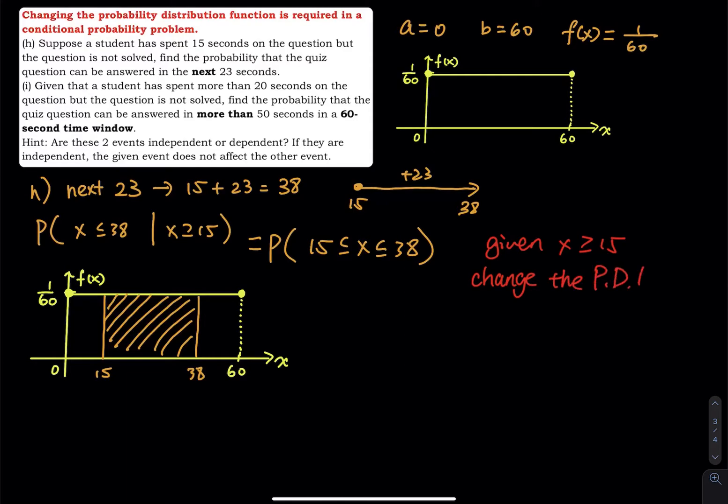Because now the minimum is equal to 15. So the PDF is f of X equals to 1 divided by 60 minus 15. So f of X is now equals to 1 divided by 45.